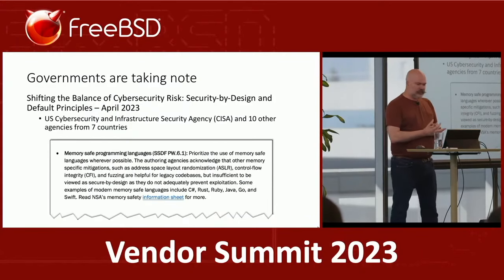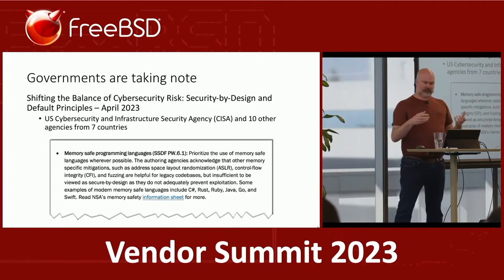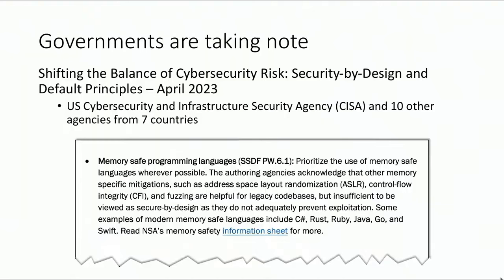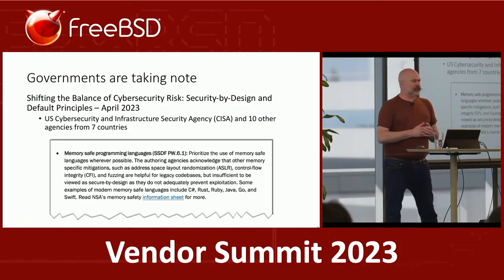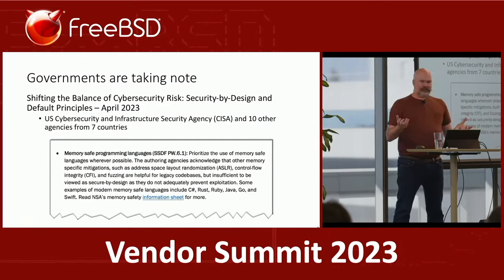Governments are taking note. The U.S. Cybersecurity and Infrastructure Security Agency, CISA, along with 10 other agencies across seven countries — Five Eyes plus the Netherlands and Germany — endorsed guidance that includes the use of memory-safe programming languages. They point out that things like ASLR, control flow integrity, and fuzzing are all great and helpful, but at the end they are failures — they do not solve the problem.